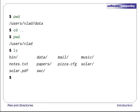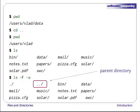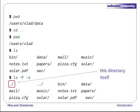The special directory .. doesn't usually show up when we run ls. If we add the -a flag, though, it will be displayed. -a stands for show all. It forces ls to show us directory names that begin with dot, such as .., which, if we're in /users/vlad, points to the users directory. We also see another special directory that's just called dot, which is the directory we're currently in. It may seem redundant, but we'll see some uses for it in later episodes.